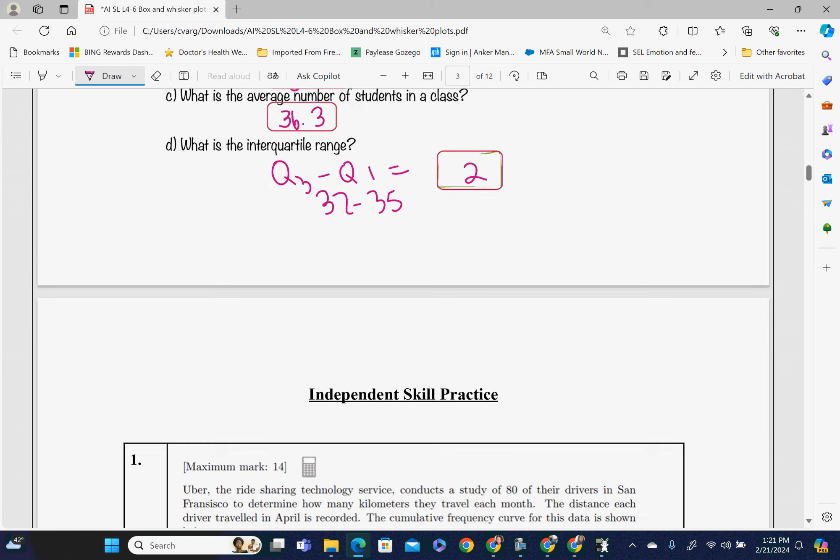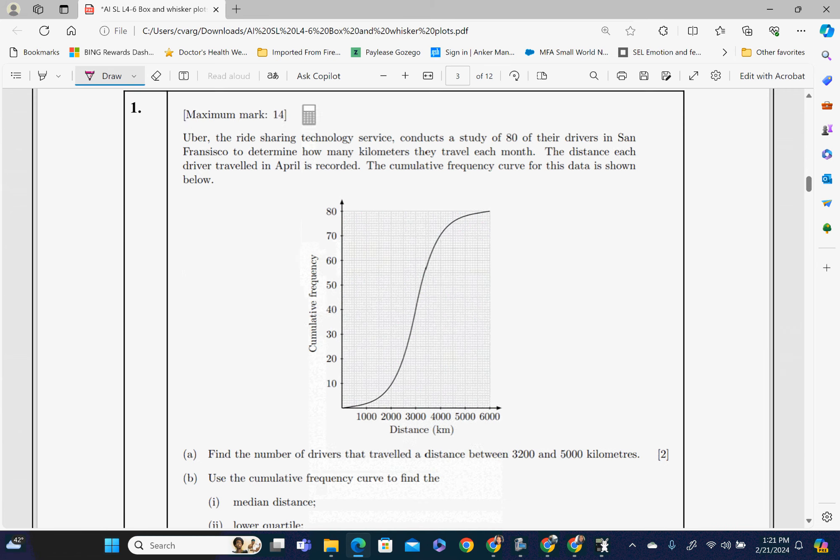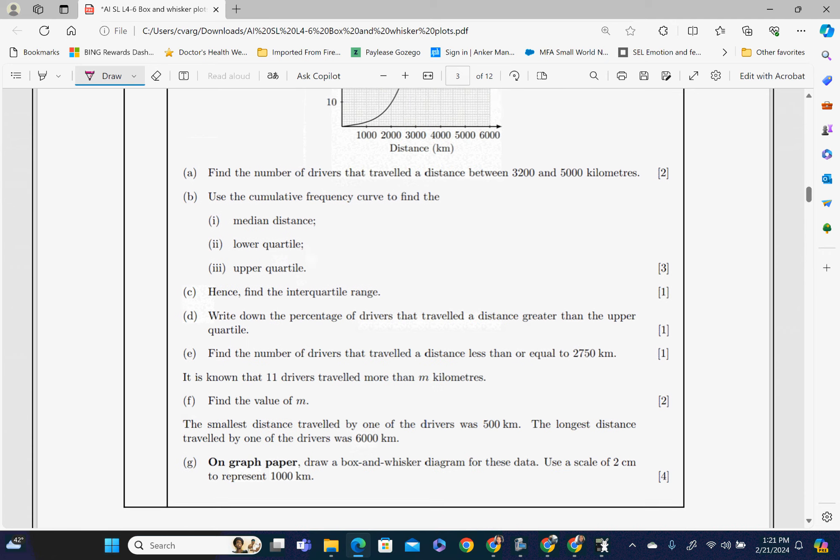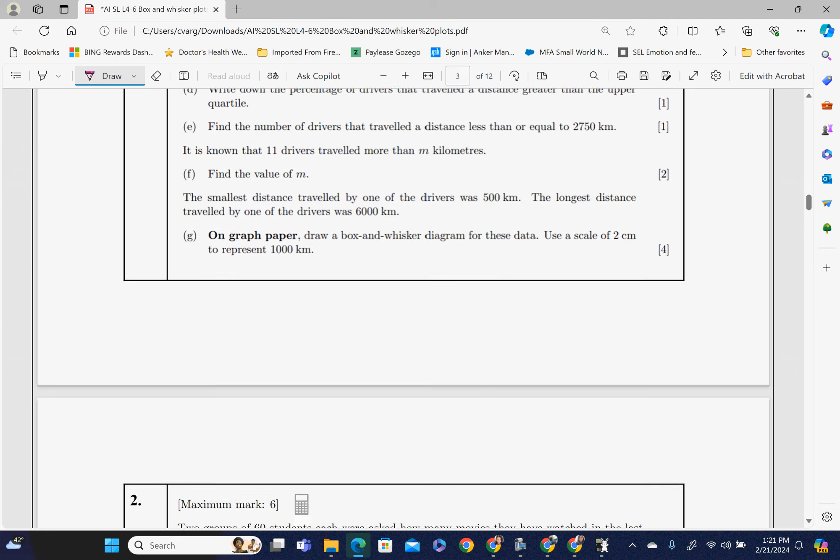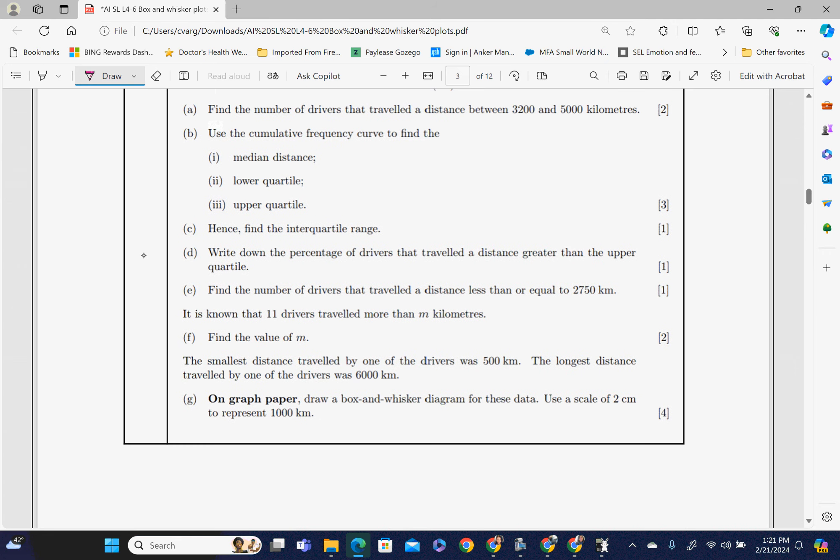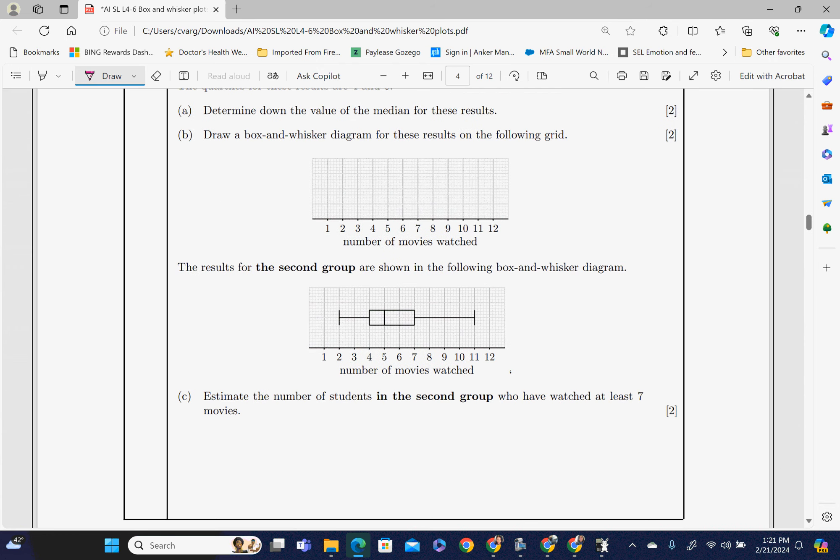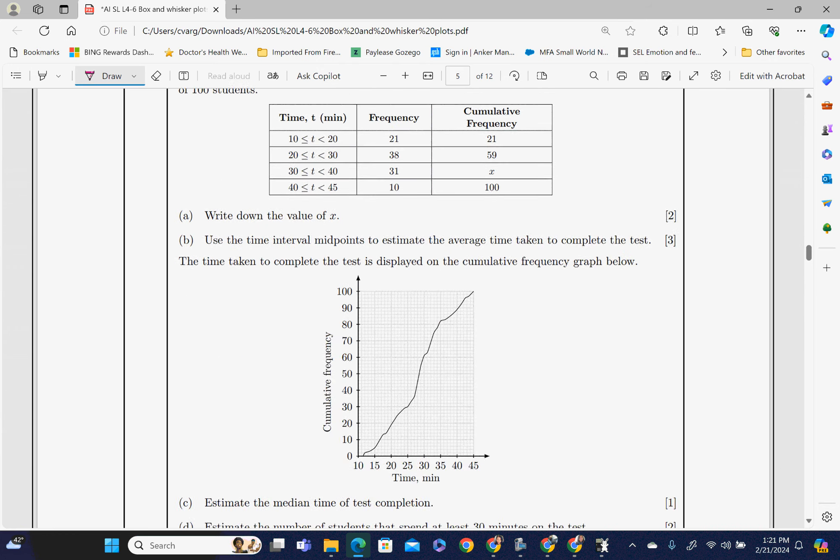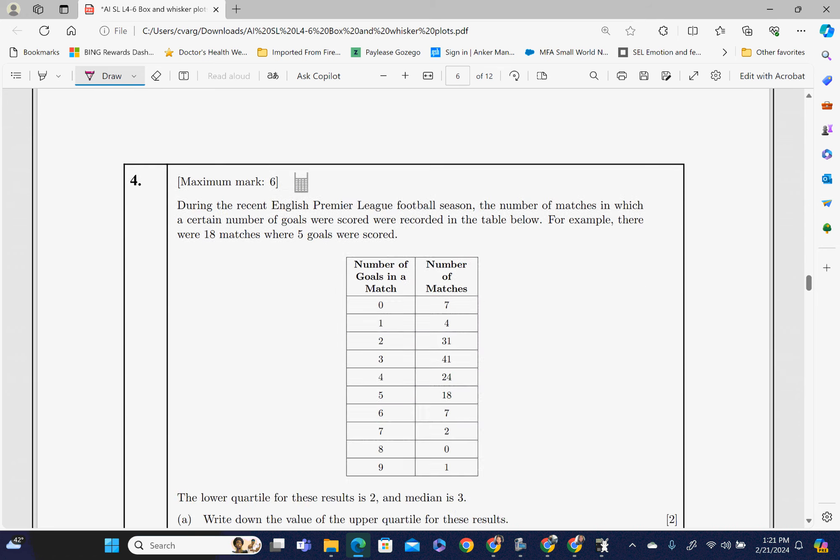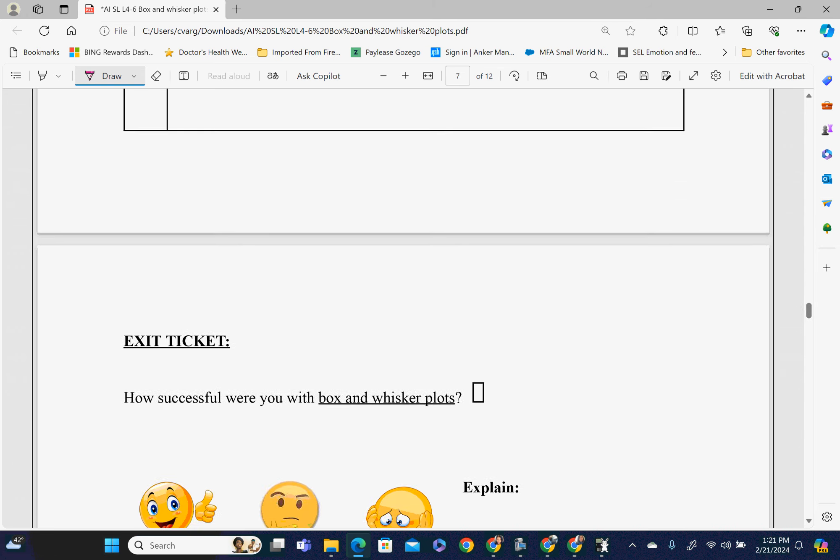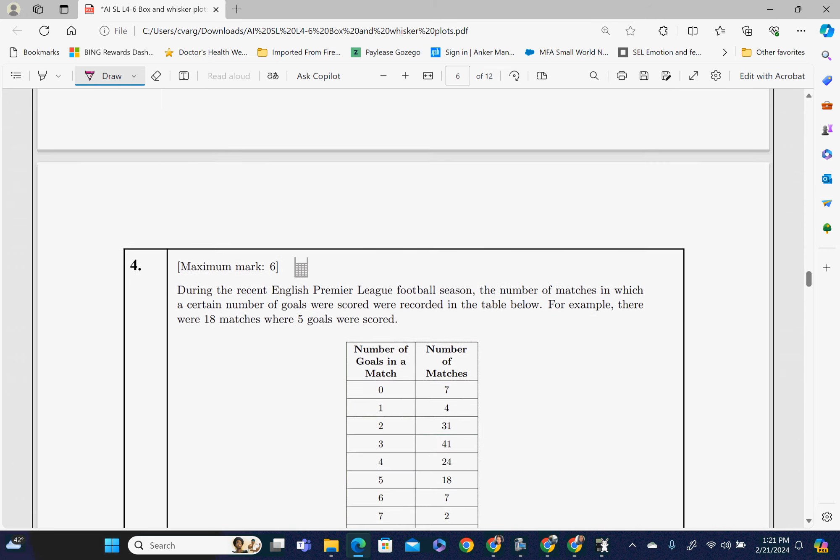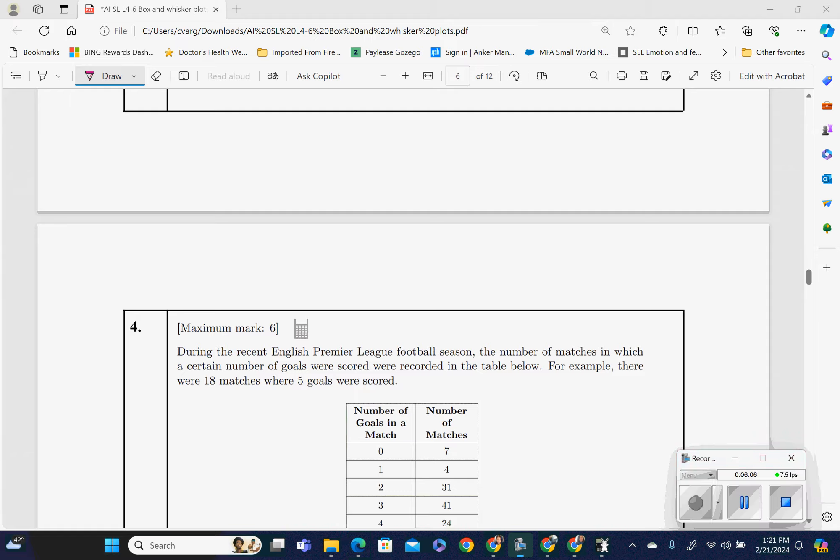We are done. Now it is time to do some independent practice. This is a throwback on cumulative frequency, and I do want you to do a box and whisker plot for that set of data. These are some more questions. Go ahead and try these questions and check your work with me. Four questions, not bad. Good luck!